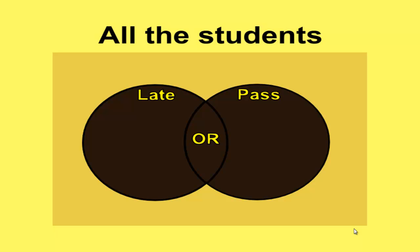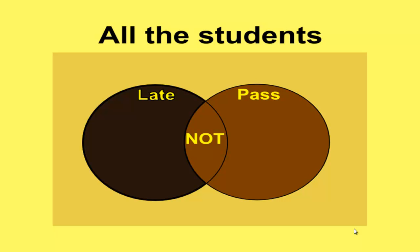The next concept is NOT. Supposing we look at those who are late, but NOT those who pass. Well that's this shaded area. The NOT stops all the passes happening.